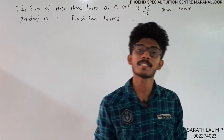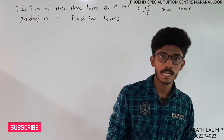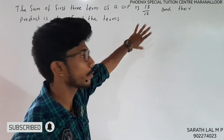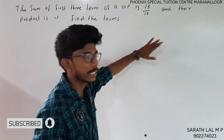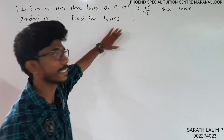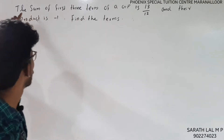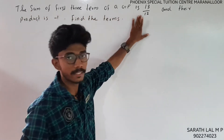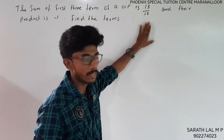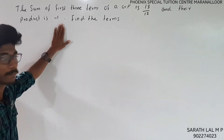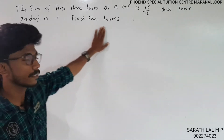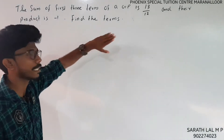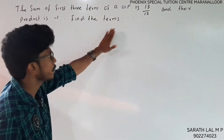Hi friends, welcome to the middle ages. We are going to talk about important questions in Mathematics — specifically GP. The sum of first three terms of a GP is 13 by 12 and their product is minus 1. Find the terms and the common ratio.